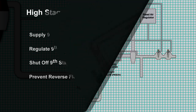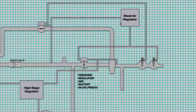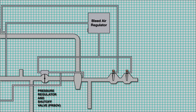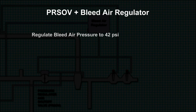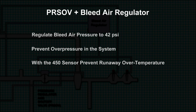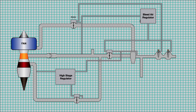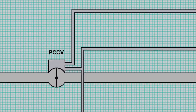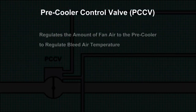Bleed air pressure is controlled by the pressure regulating and shutoff valve, or PRSOV, and the PRSOV is controlled by the bleed air regulator. Together they regulate bleed air pressure to 42 PSI, prevent overpressure in the system, and, in concert with the 450 sensor, prevent runaway over-temperature. The pre-cooler control valve, or PCCV, regulates the amount of fan air to the pre-cooler to regulate bleed air temperature.